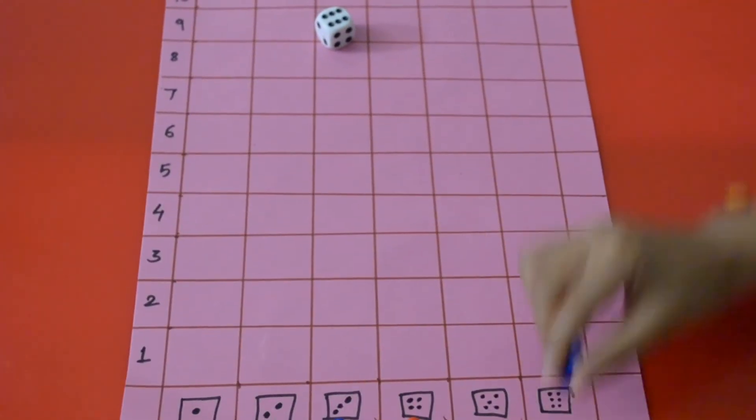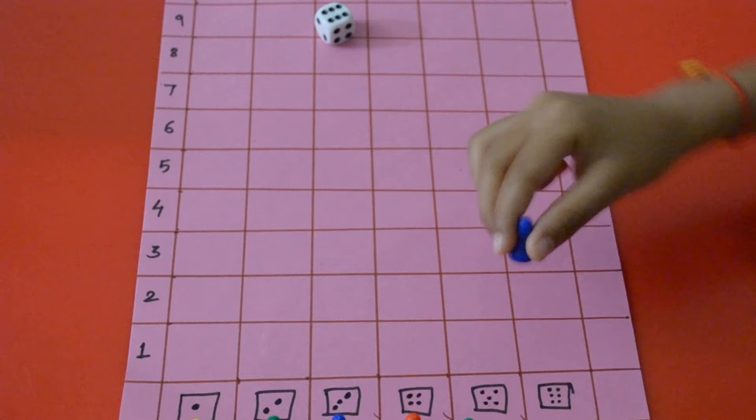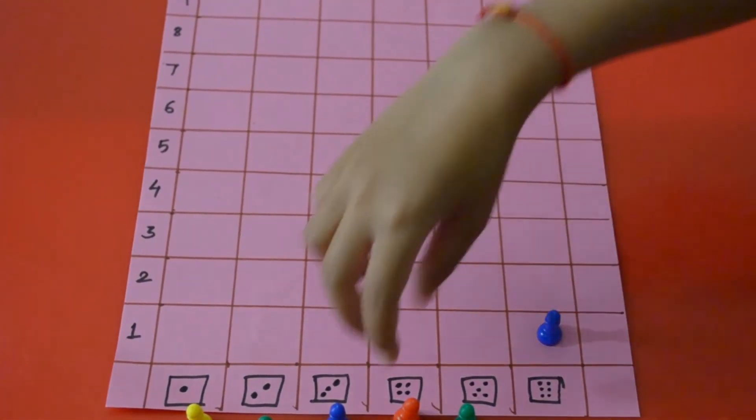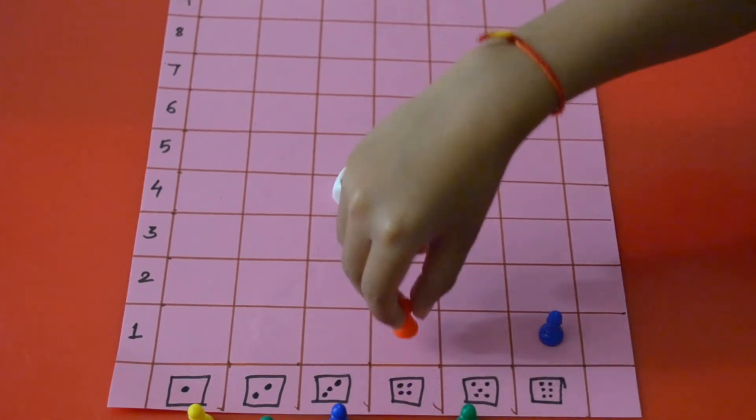He rolled the dice. We got number of dots on the dice is six, means marker number six plays and comes one step forward. Then he got number four, and so on.